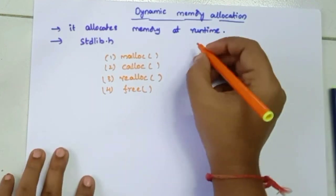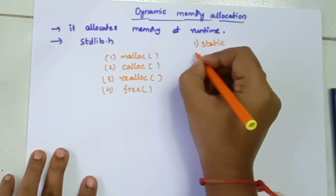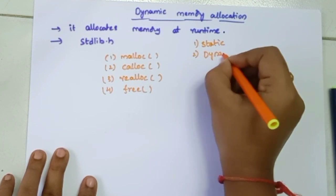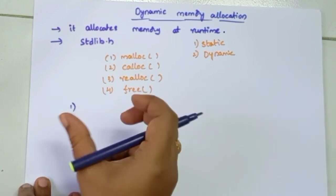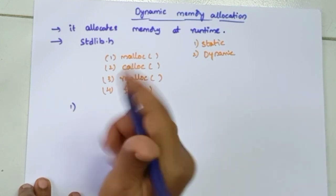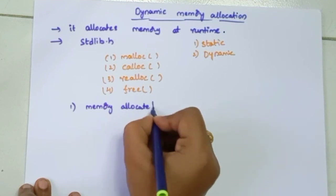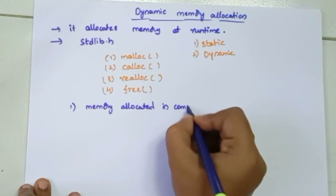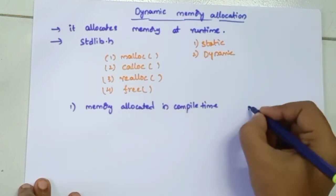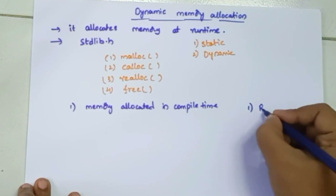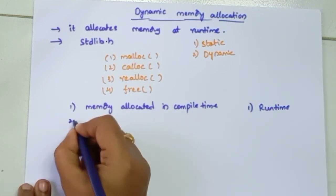We have two types of memory allocation: the first one is static memory allocation and the second one is dynamic memory allocation. The difference is that in static memory allocation, memory is allocated at compile time, whereas in dynamic memory allocation, memory is allocated at run time. That is the main difference between static memory and dynamic memory.